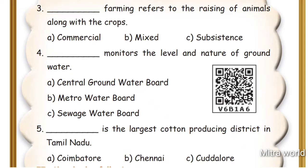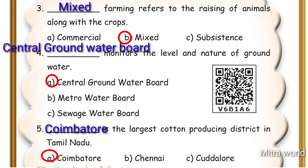Question 3: ___ farming refers to the rearing of animals along with the crops. Options are: Commercial, Mixed, Subsistence. Answer: Option B - Mixed farming. Mixed farming refers to the rearing of animals along with the crops.